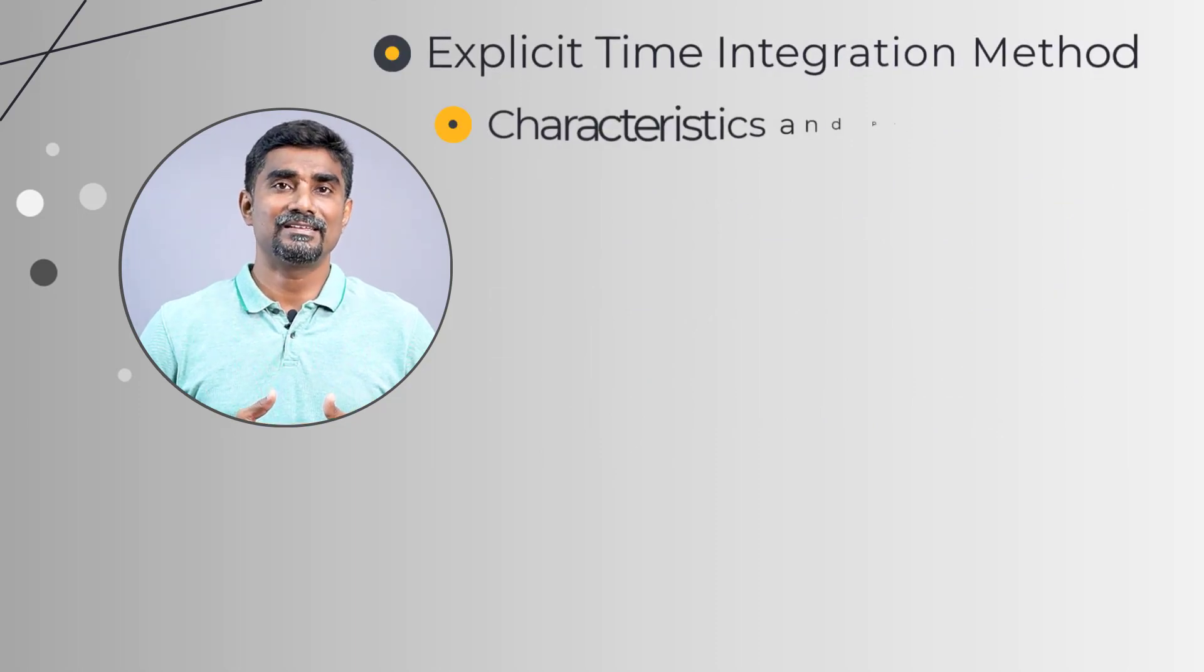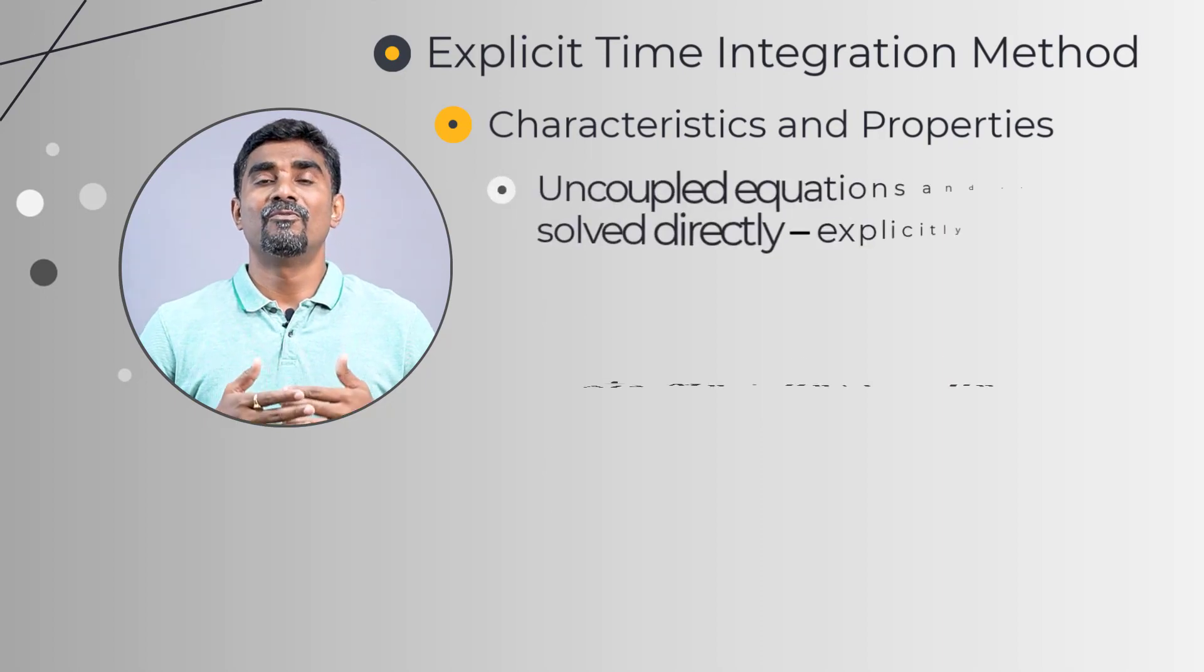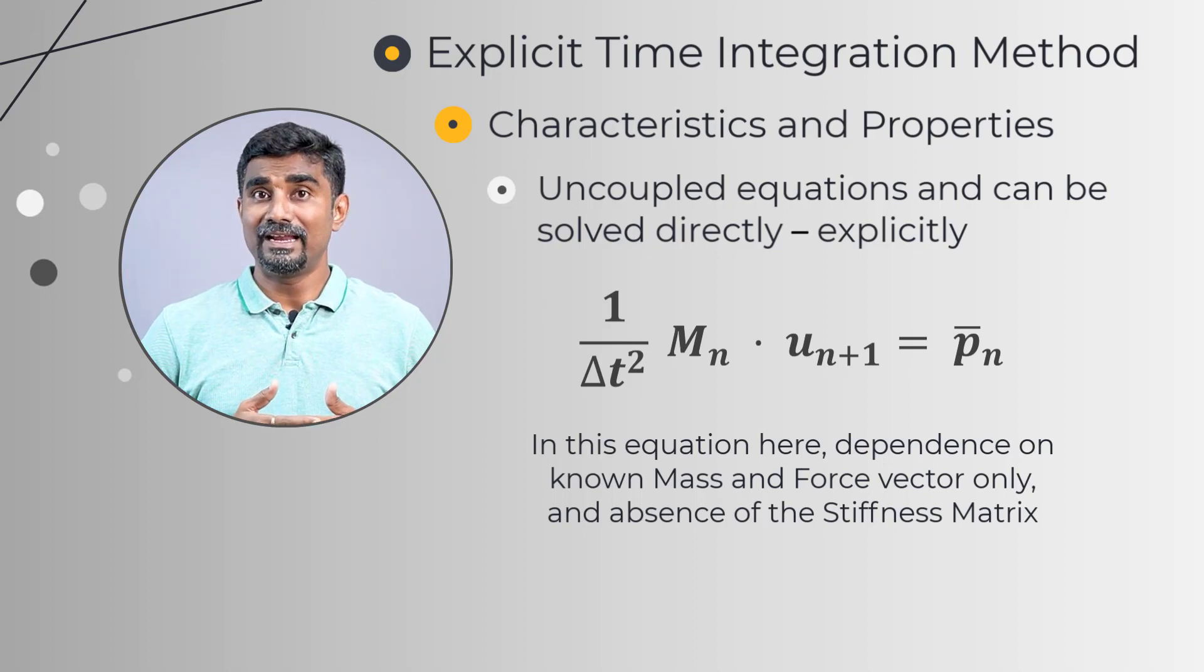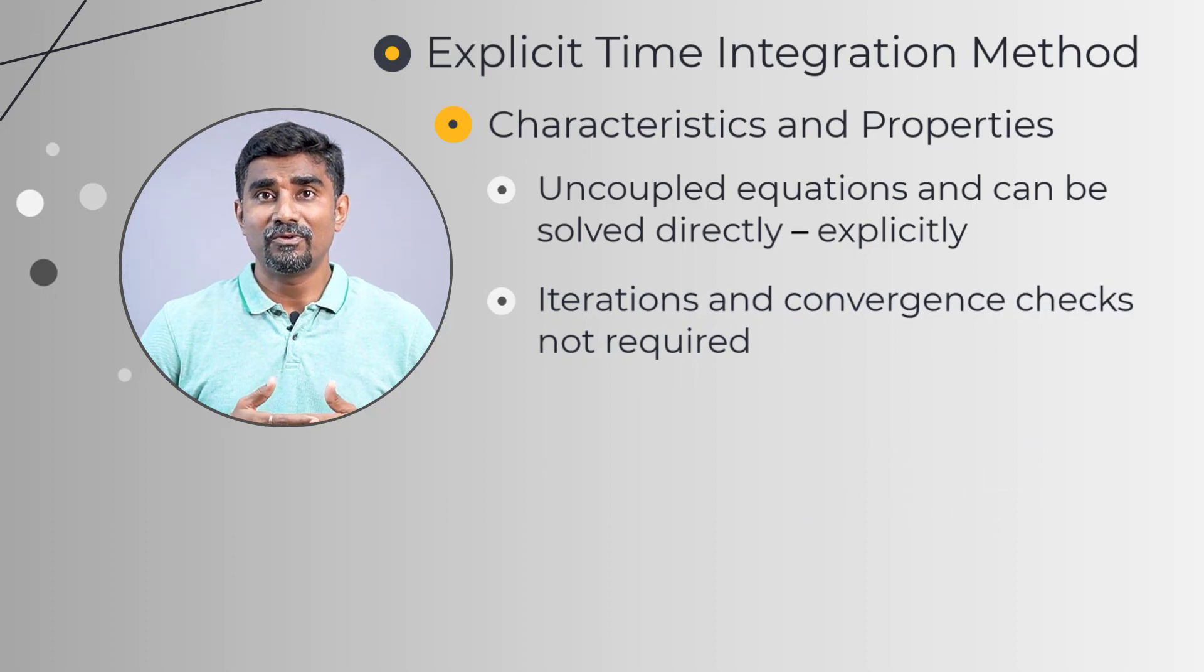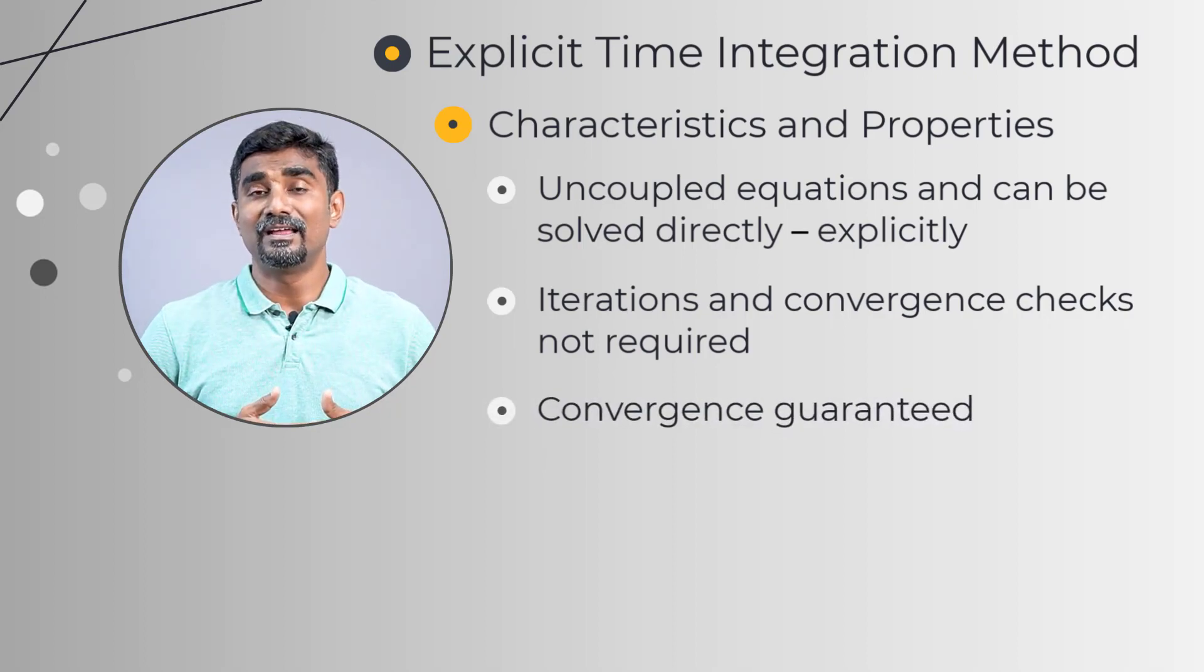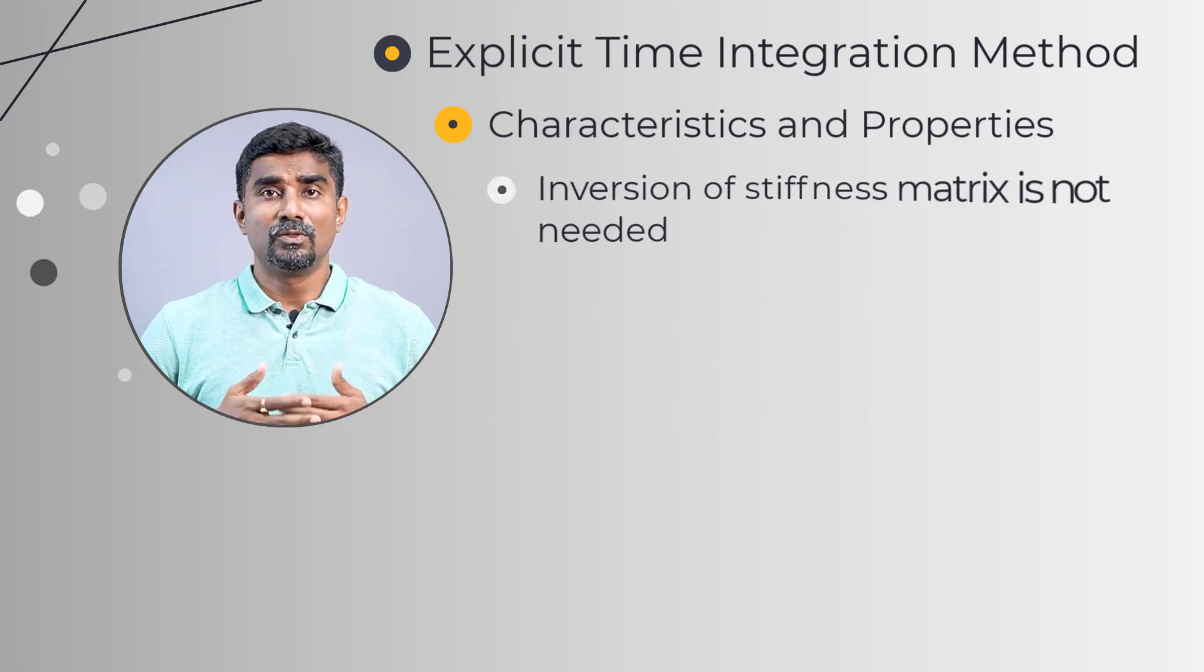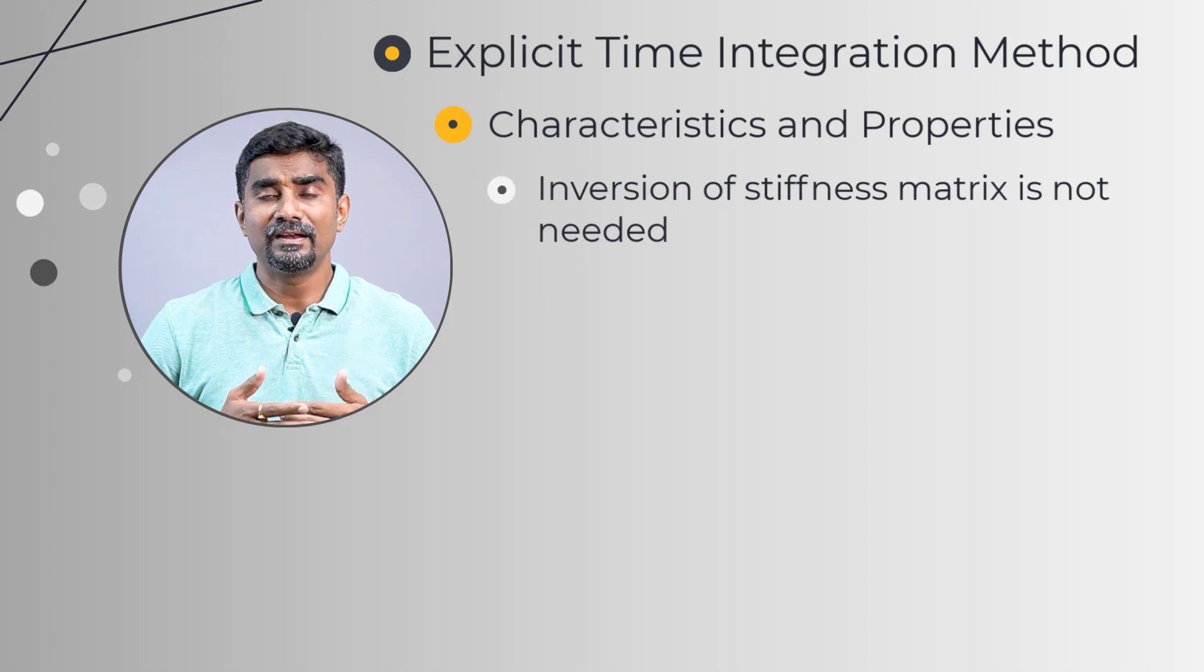Now, let us discuss some characteristics and properties of the explicit time integration method. For this method, the equations become uncoupled and can be solved directly or say, explicitly. Hence, iterations are not required and thus it does not need any convergence checks during the solution. Convergence is guaranteed unless energy errors occur during the simulation. Moreover, there is no need for the inversion of the stiffness matrix. All nonlinearities including contact are included in the internal force vector.